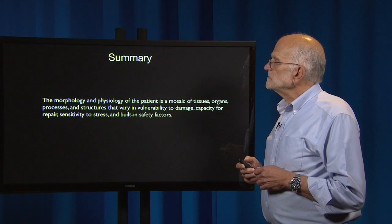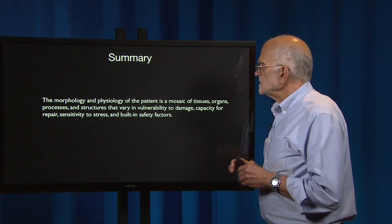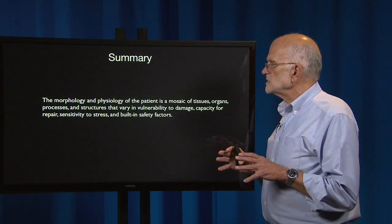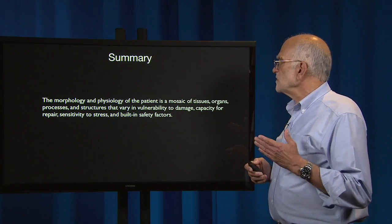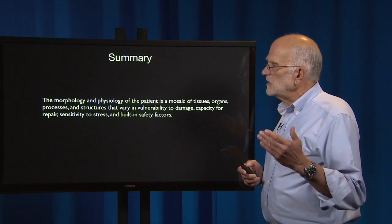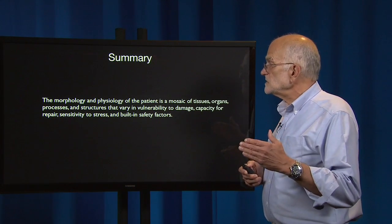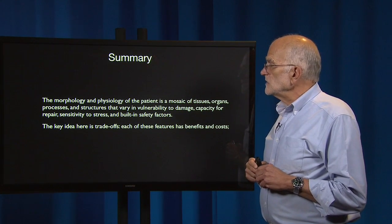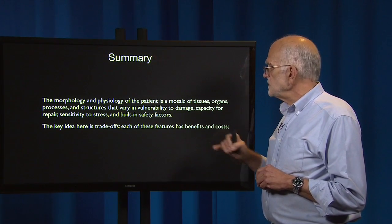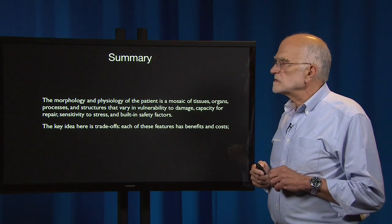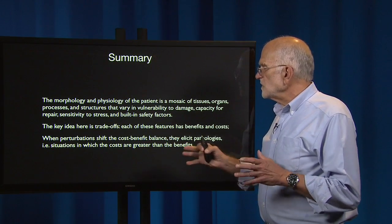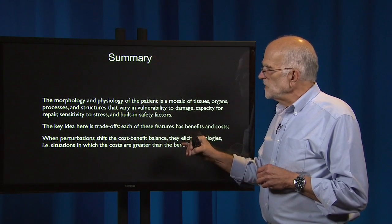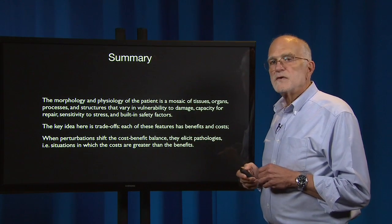To summarize: the morphology and physiology of the patient is a mosaic of tissues, organs, processes, and structures that vary in their vulnerability to damage, their capacity for repair, their sensitivity to stress, and their built-in safety factors. The key idea here is trade-offs — each of these features has benefits and costs. When perturbations shift the cost-benefit balance, they elicit pathologies, that is, situations in which the costs are greater than the benefits.